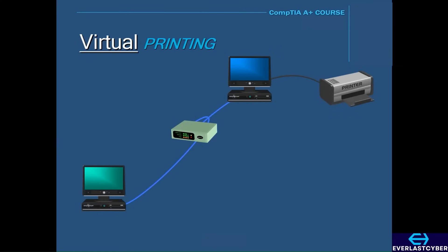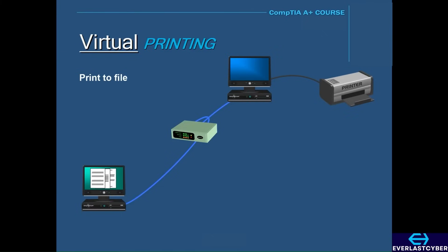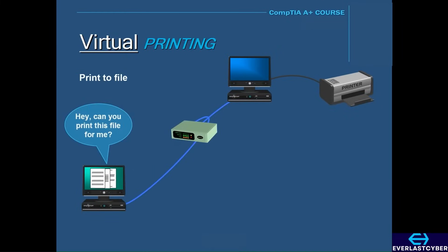Virtual printing is done for several reasons, and one of those reasons is called print to file. Print to file saves a document in a ready to print format that another printer can print. So for instance, if you want to print a document and you don't have a printer, you can use the print to file feature, and it will save the document in an uneditable digital form that can be sent to another computer, either through email or a flash drive transfer, and then that computer can print the job for you.